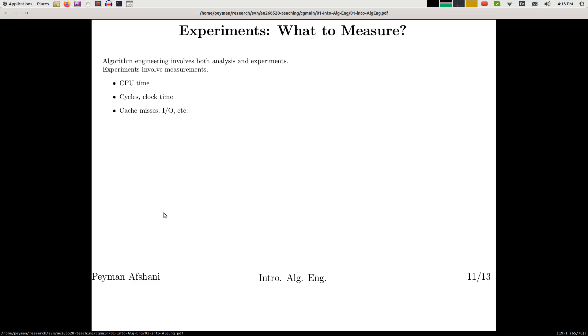So what is an experiment? Typically experiment means that you implement an algorithm, you run it, and then you measure how long it takes on a particular input. But what to measure is actually quite complicated and you can come up with lots of interesting things when it comes to what to measure.